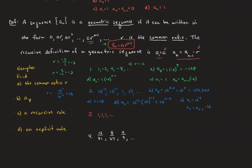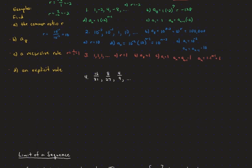The constant sequence 1, 1, 1, 1, 1 can also be considered a geometric sequence, since any term divided by the previous term is just 1. The common ratio is 1, the eighth term is 1, the recursive formula starts at 1 and multiplies by 1 each time, and the explicit formula is a sub 1 times 1 to the n minus 1, which is just 1. It's an odd case where the sequence can be considered both geometric and arithmetic.